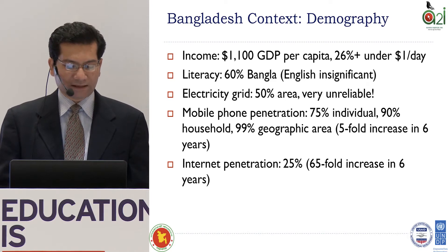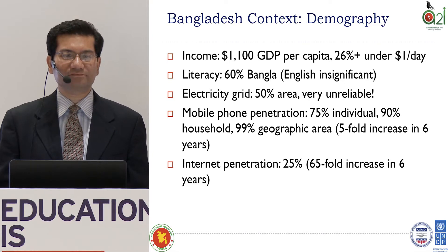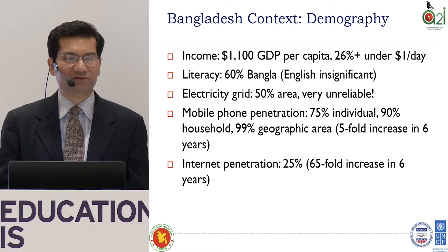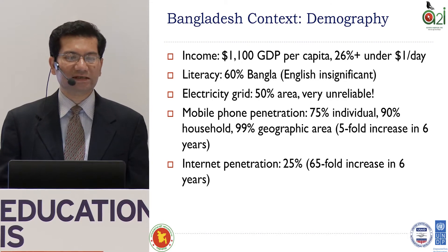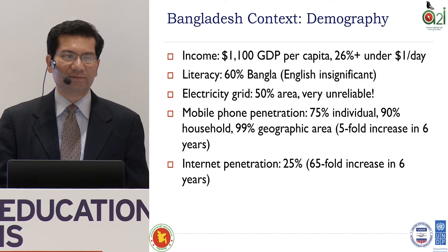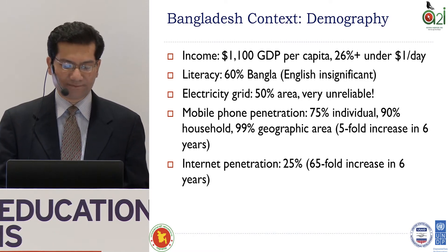Electricity, another prerequisite for technology, is also not adequate in the country. About 50% of the area is under grid connection and the rest has some solar power. But a large part of the country is actually without electricity.